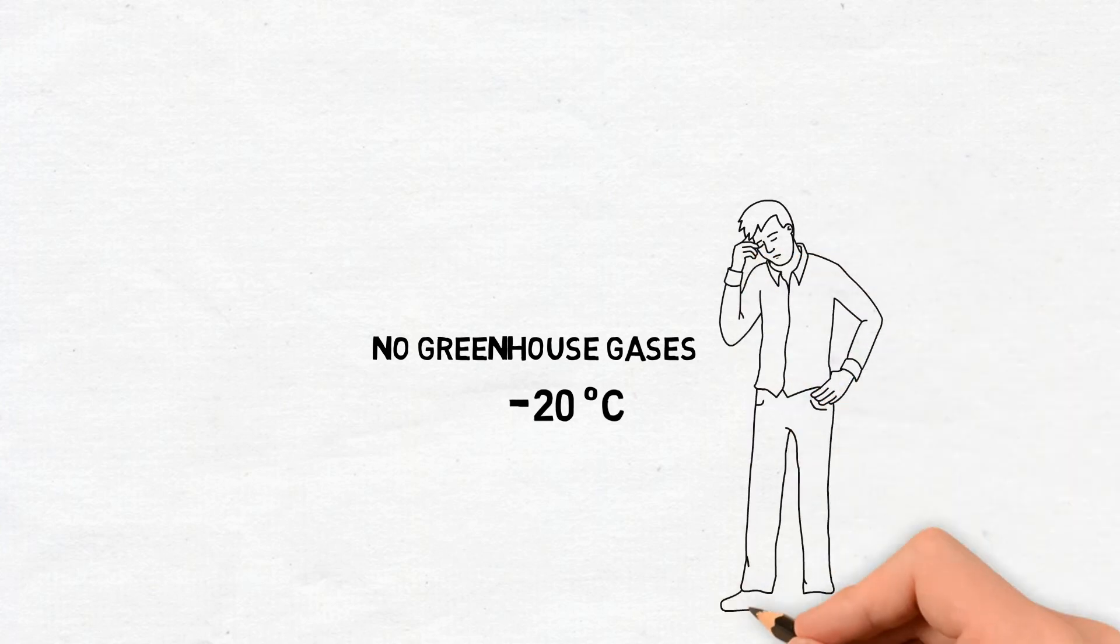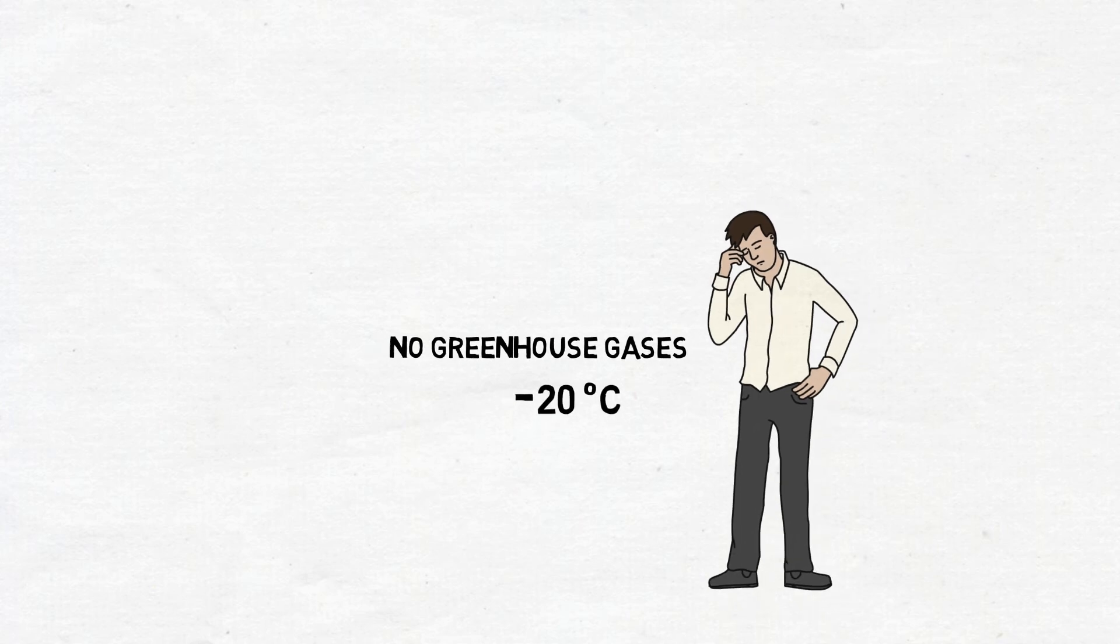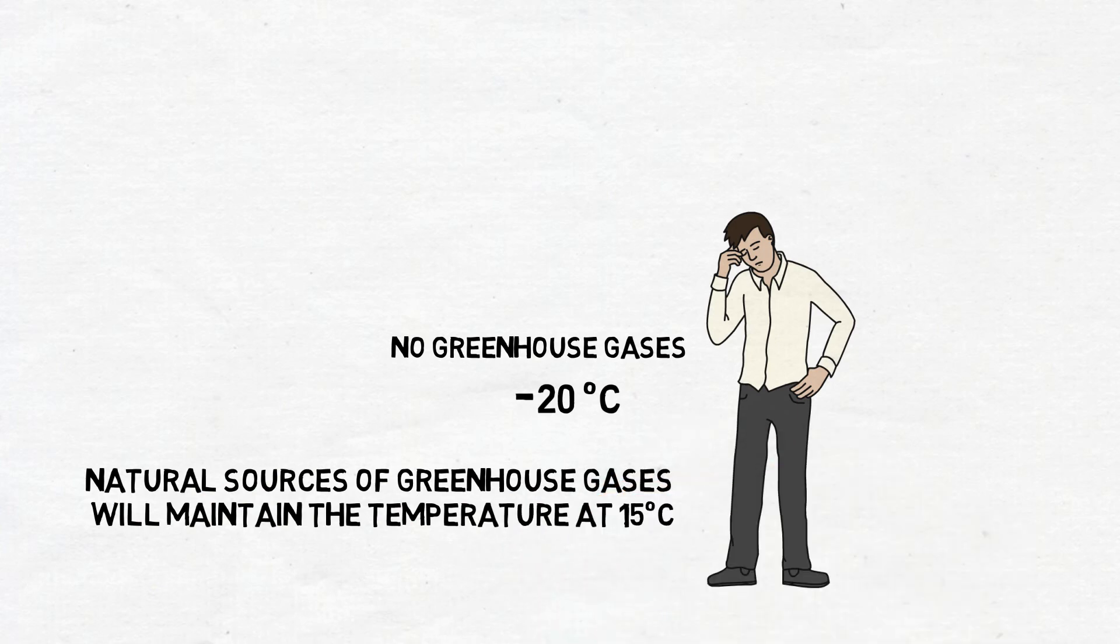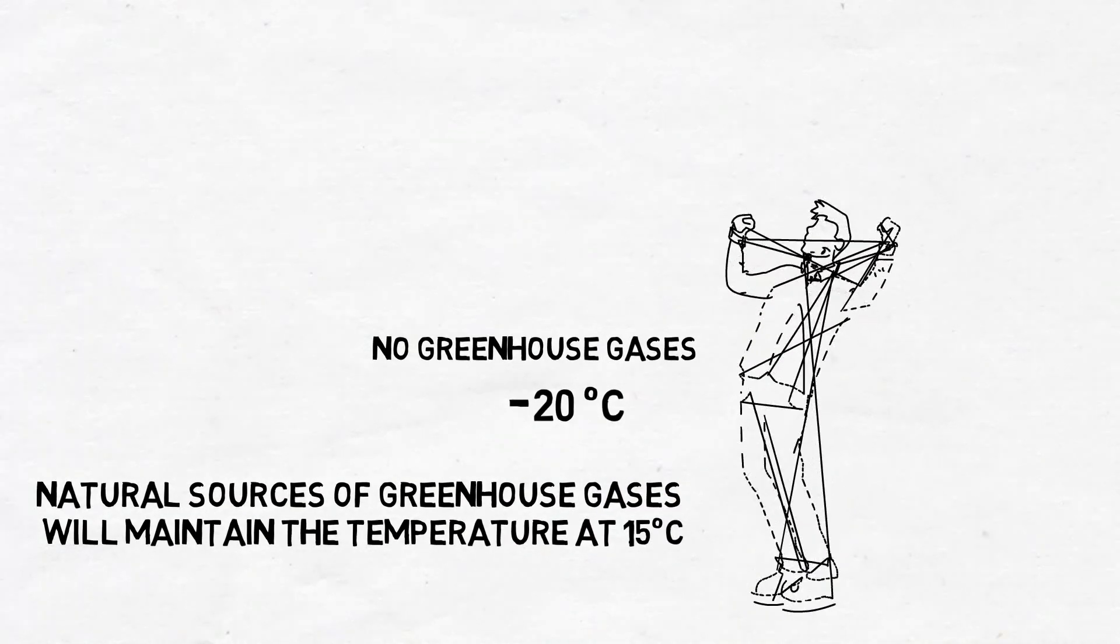But no need to worry about it, because our planet will always have some greenhouse gases in its atmosphere due to naturally occurring processes in the volcanoes and the ocean floor, which will maintain the Earth's temperature of around 15 degrees Celsius.